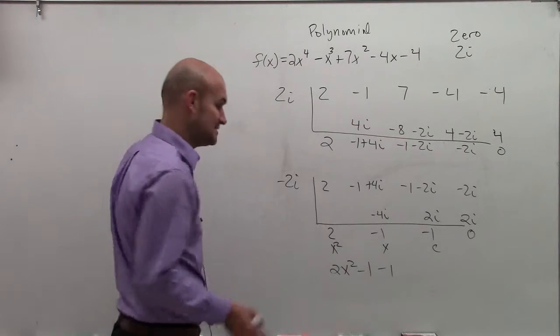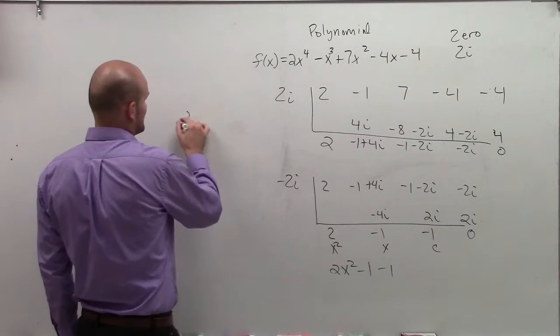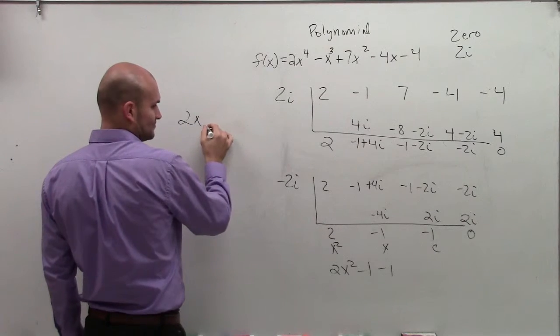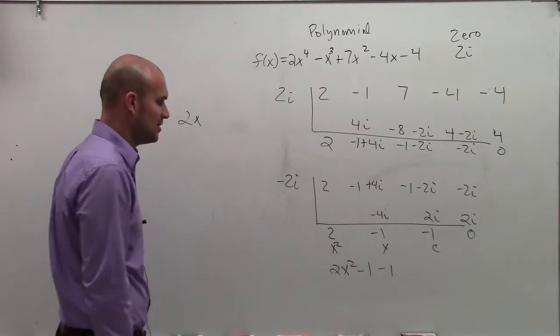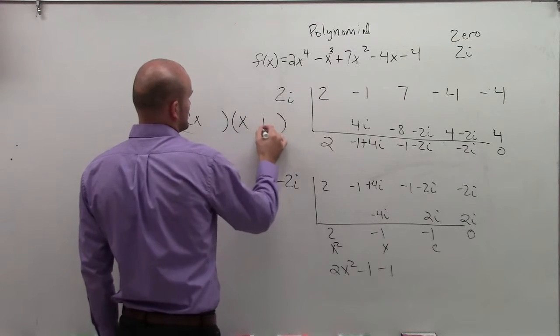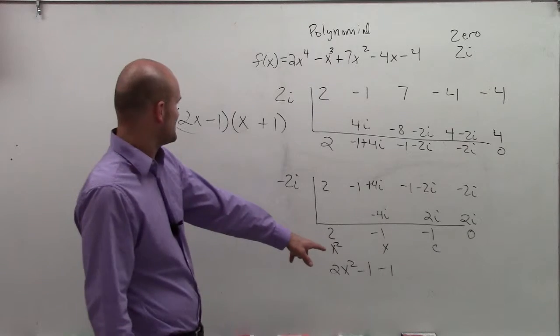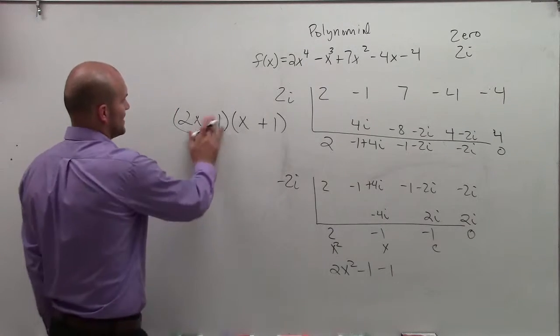So now, if I want to find the remaining zeros, I need to see, can I factor this out anymore? So you say 2x, and what two numbers multiply to give you negative 1? So it's either going to be plus 1 or minus 1. And we look at this, my middle term has to be a negative, so that's not going to work.